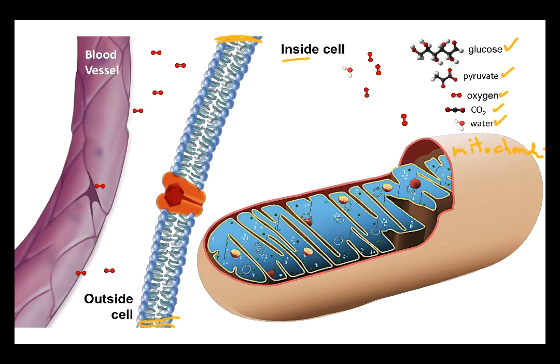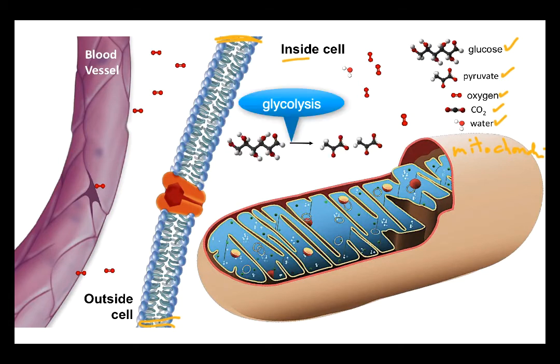Notice that glucose is a six-carbon molecule — the black dots in the ball-and-stick model represent carbons. The first thing that happens is glucose is broken down into a three-carbon molecule called pyruvate. Oxygen can diffuse through the cell membrane because it's small and nonpolar; glucose has to go through the transport protein. Glycolysis splits the six-carbon glucose into two three-carbon pyruvate molecules, also producing electrons that will be carried into the mitochondrion. Glycolysis takes place in the cytoplasm and produces a net gain of two ATP.